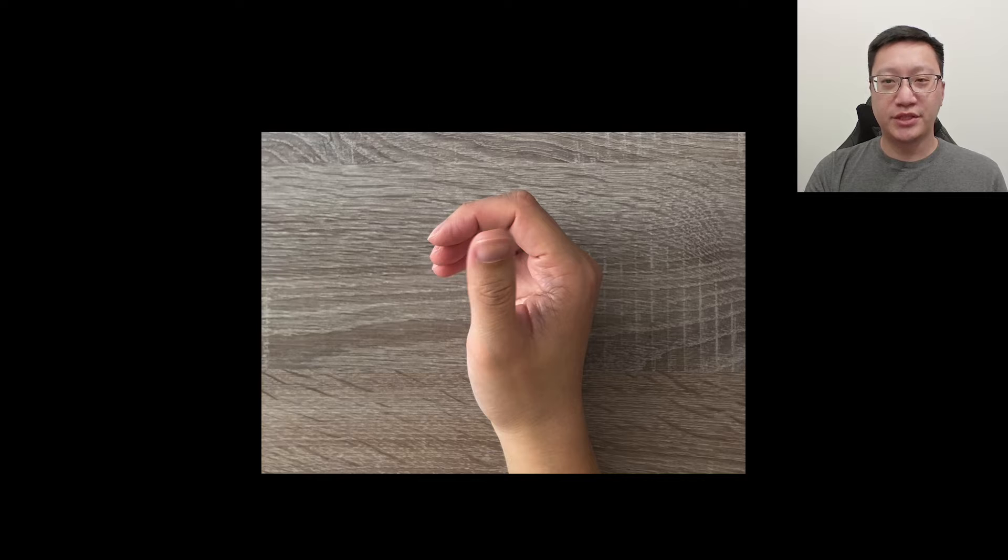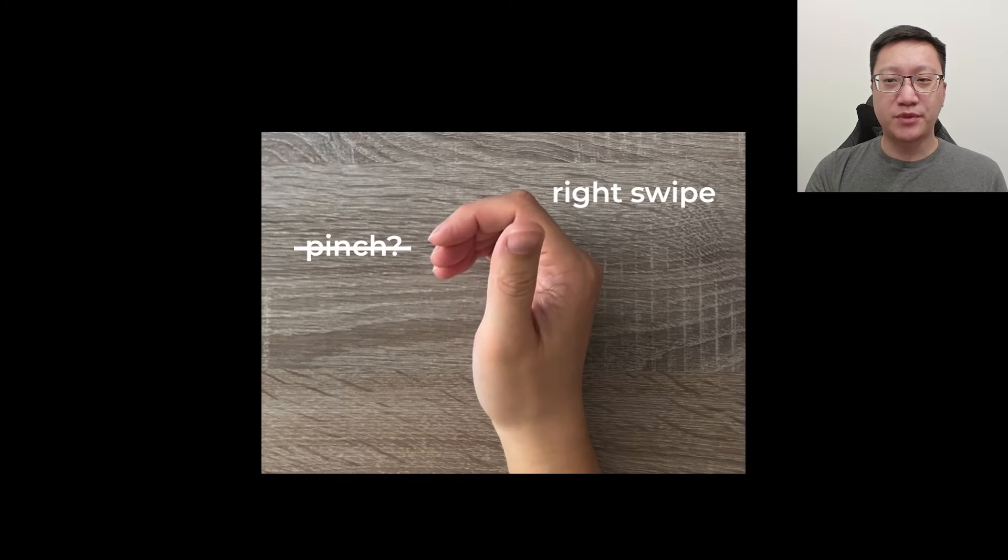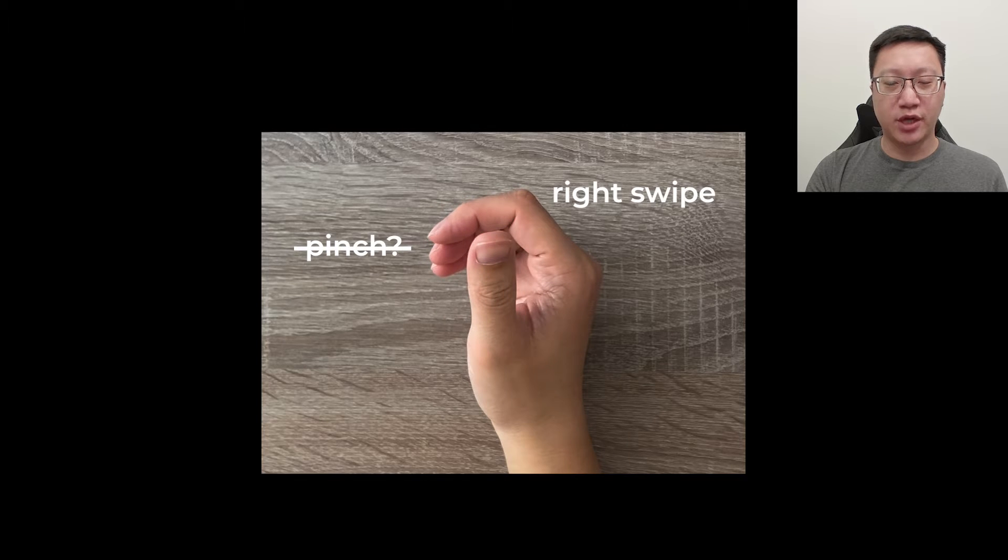Our model also learns pinch so that it can distinguish between swipes and taps and pinches. For example, the thumb may contact near the index finger tip at the start of a right-handed right swipe. A recognizer that understands both swipes and pinches will know the gesture is a right swipe and not a pinch.